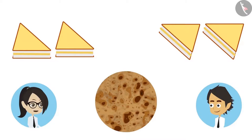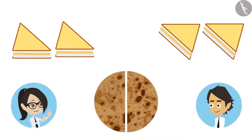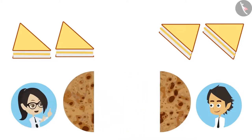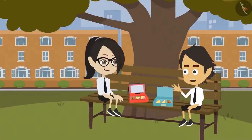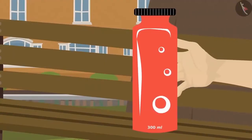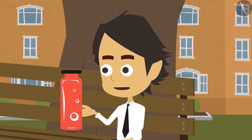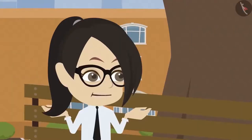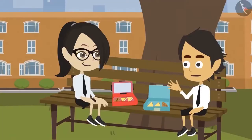This is very easy. We will cut it from the middle. Now look, we made two equal halves of one paratha. Now you eat one part and I will eat one part. This means objects can be counted and divided to make a half. Today my mother has also given me buttermilk in this bottle. How do we divide this into two halves? I also don't know. Why don't we ask madam after finishing our lunch?